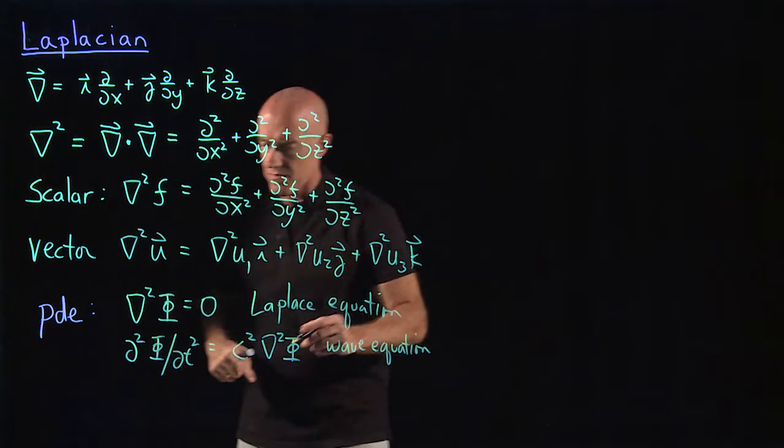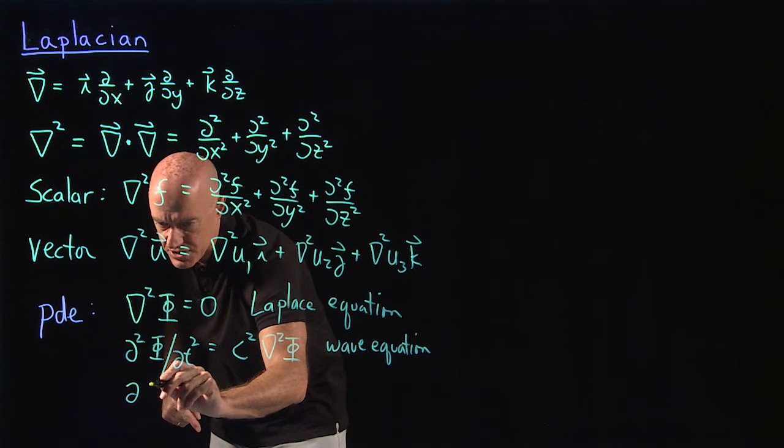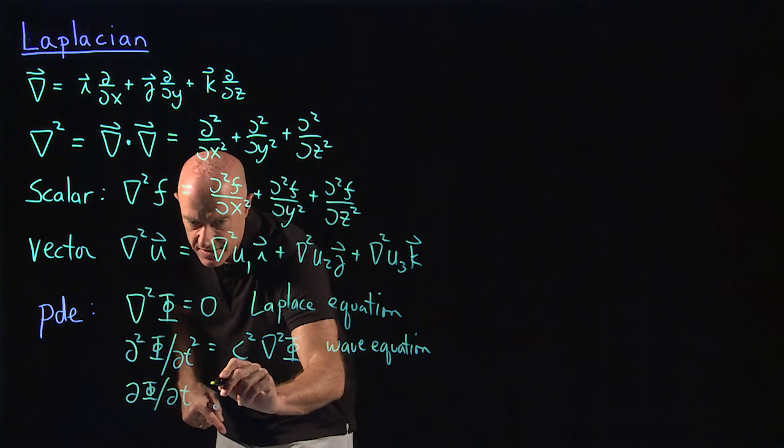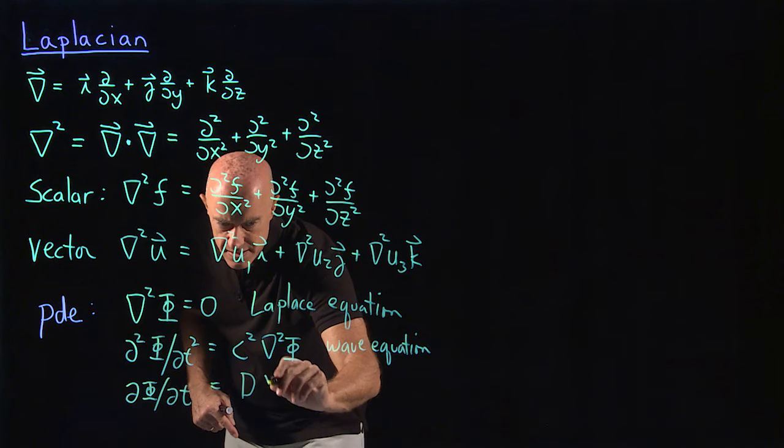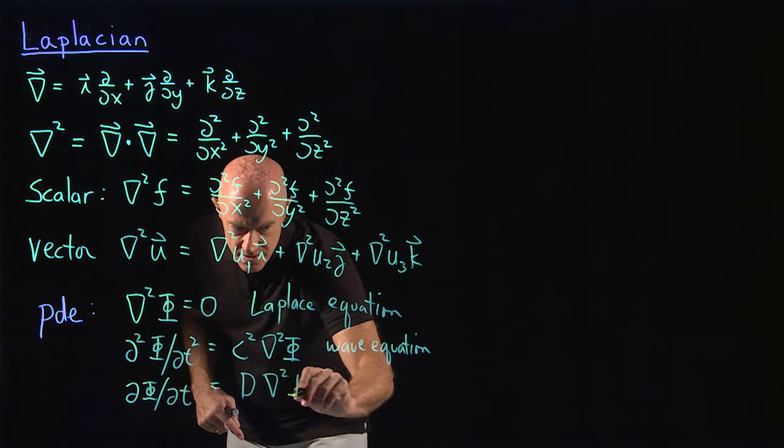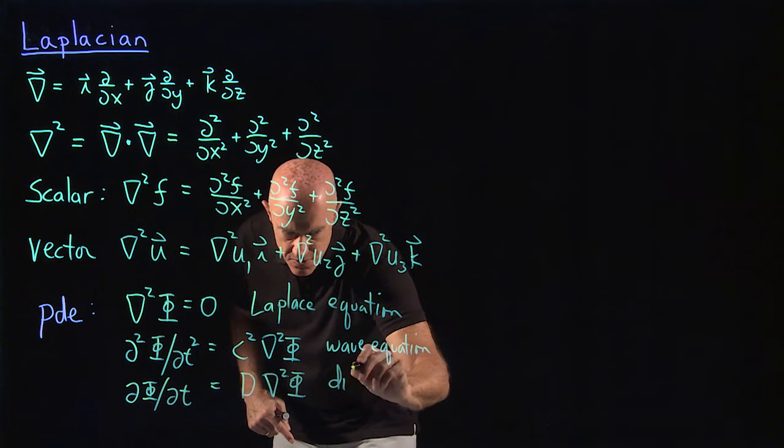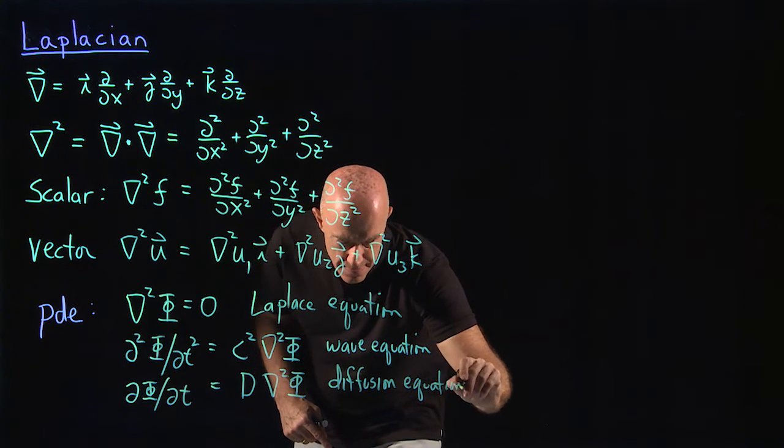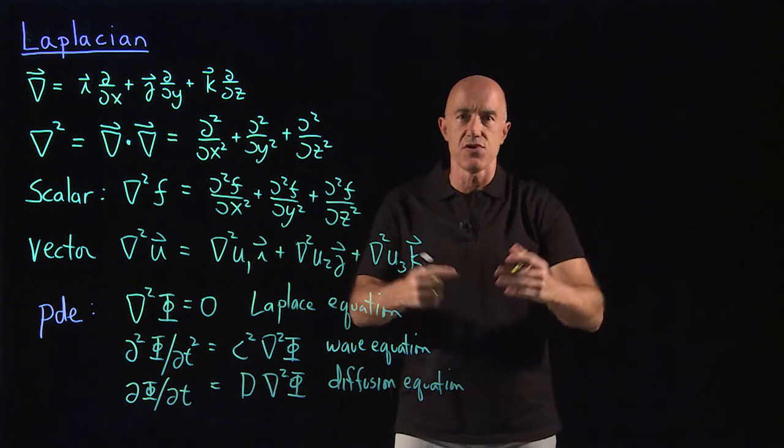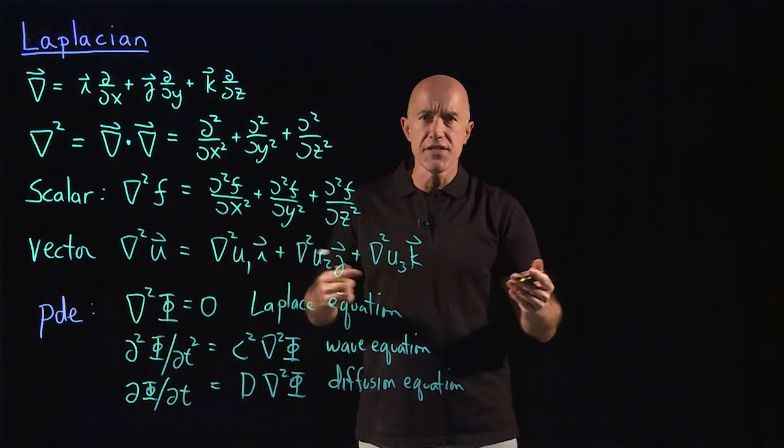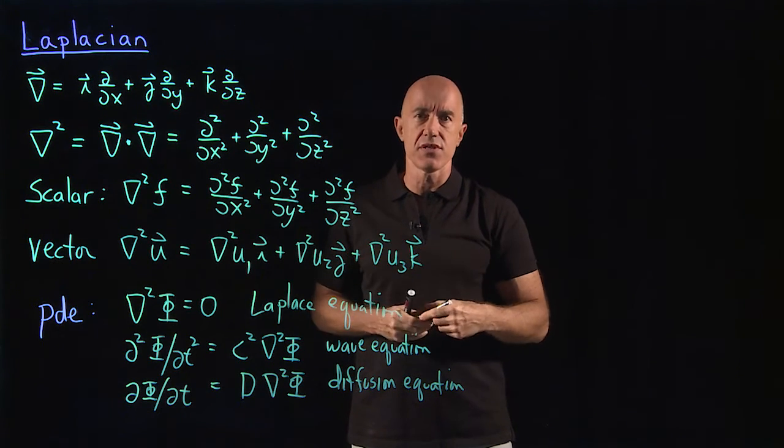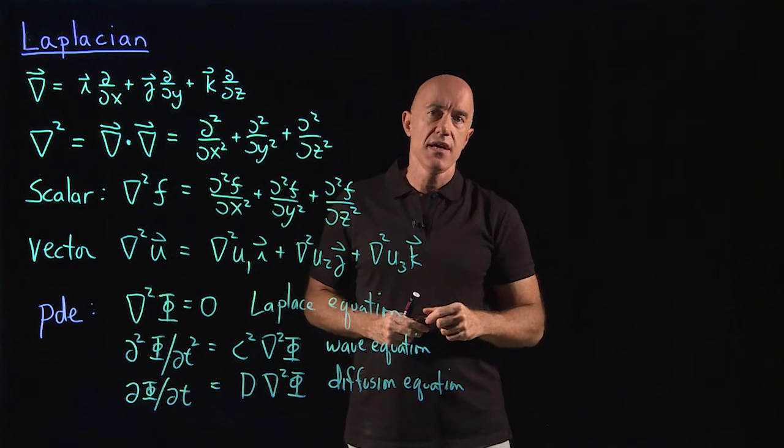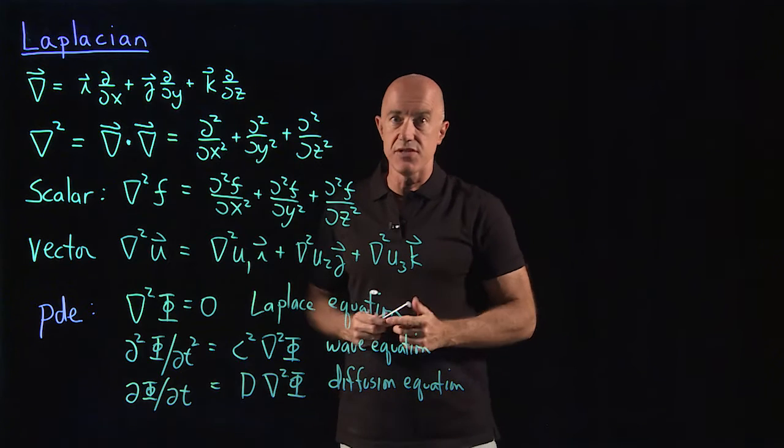The third equation which I want to present is the diffusion equation which is a first derivative with respect to time d phi dt equals a diffusion constant times del squared phi. So this is the diffusion equation, which I actually solve in my course differential equations for engineers.